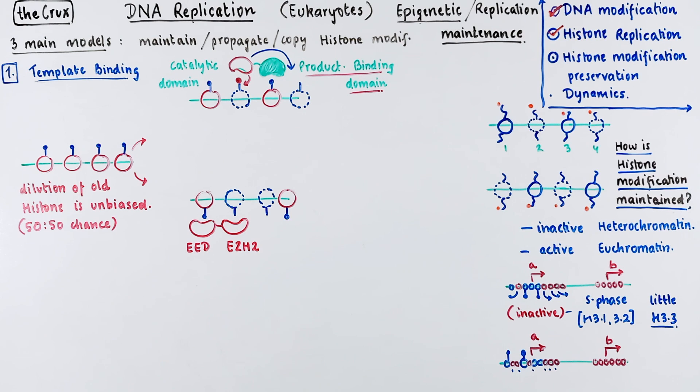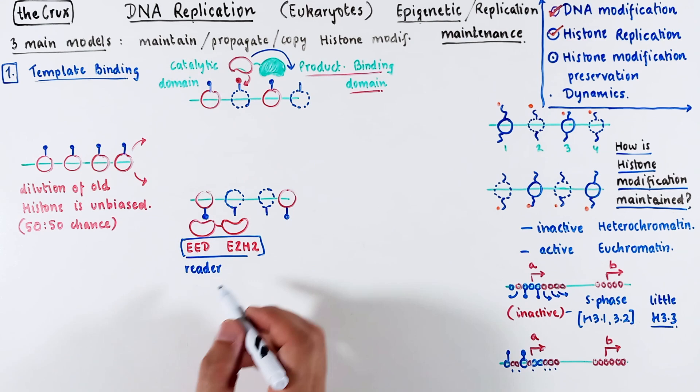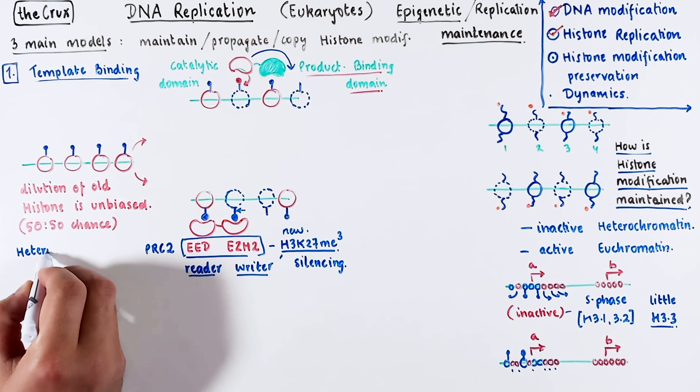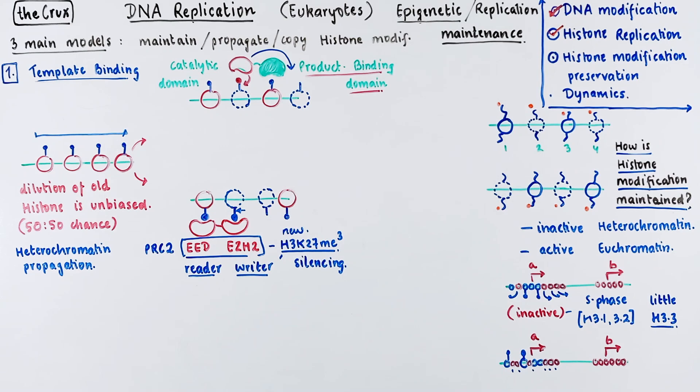An example of this product binding protein is the EED protein which has its partner called EZH2. Another way to call this is the reader and writer proteins. The reader reads the existing H3K27 ME3 and the writer installs a new H3K27 trimethylation on the adjacent histones. This EED and EZH2 complex is part of a larger polycomb repressive complex too. As the name suggests, this is involved in silencing or heterochromatin propagation. Now this same locus will be heterochromatinized in the daughter DNA as well.